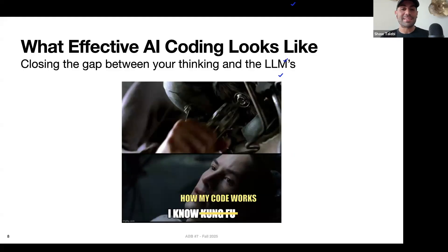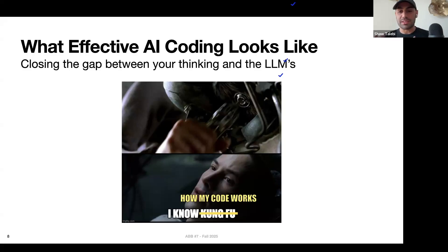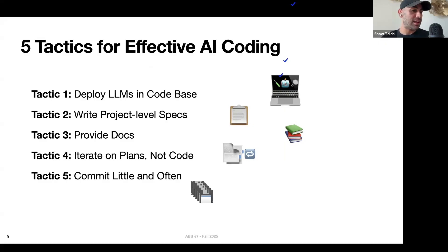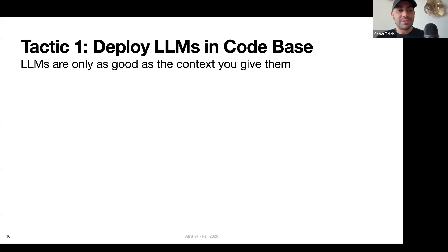The extreme case is kind of like plugging yourself into the Matrix — instead of learning Kung Fu, you have a deep understanding of how your code is actually working. AI coding isn't about vibe coding, even though that can be fun. It's this active process of being plugged into your software system — the harmony and synergy between you and the LLM. To make this tactical, I'm going to walk through five helpful tips: deploying LLMs in your codebase, writing clear specs, providing documentation, iterating on plans not code, and committing little and often.